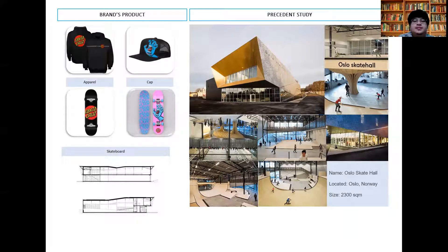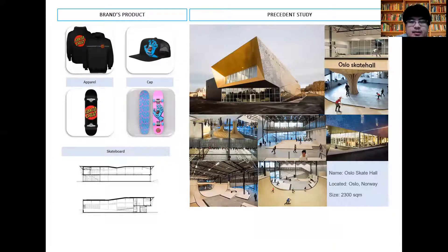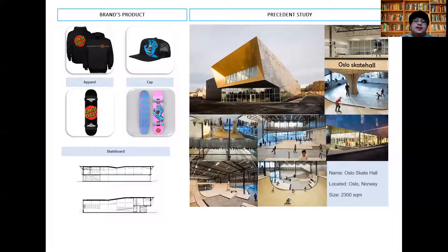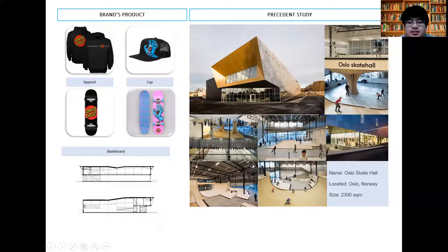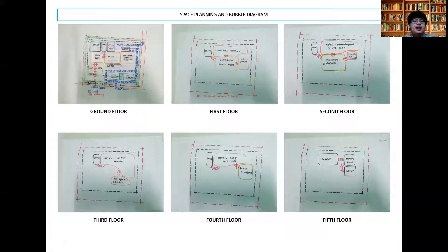For the precedent study, I chose Oslo Skate Hall in Oslo, Norway because this skate plaza is indoor. It is the first of its kind in Norway. This can be reinvented and reused into my design. They have a big place for children, for elders, and also a cafe for visitors to come and enjoy their games and eating.